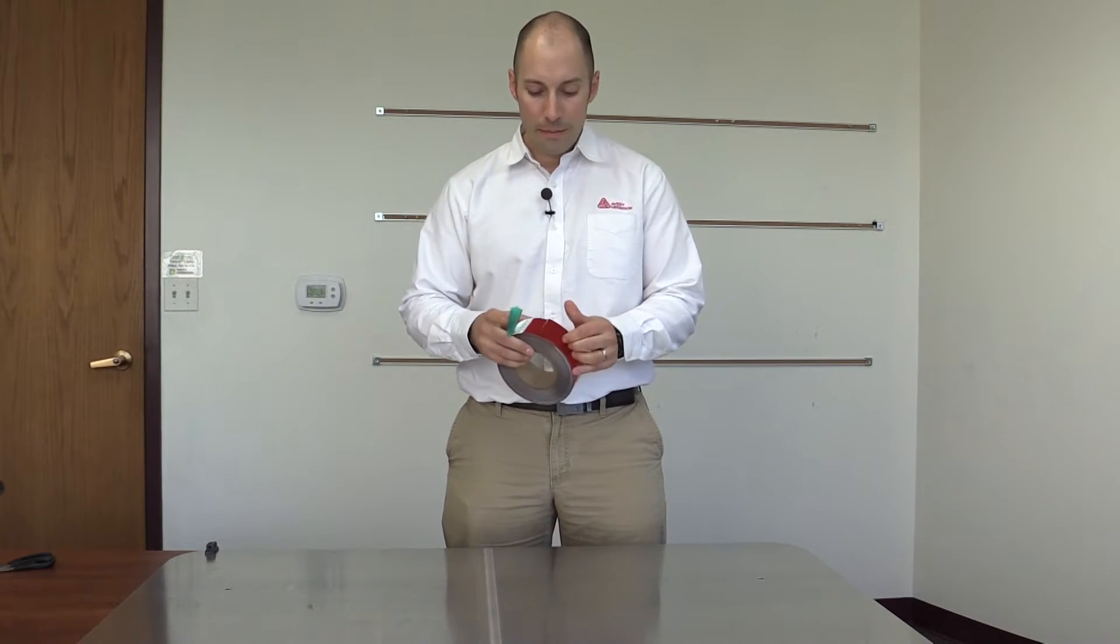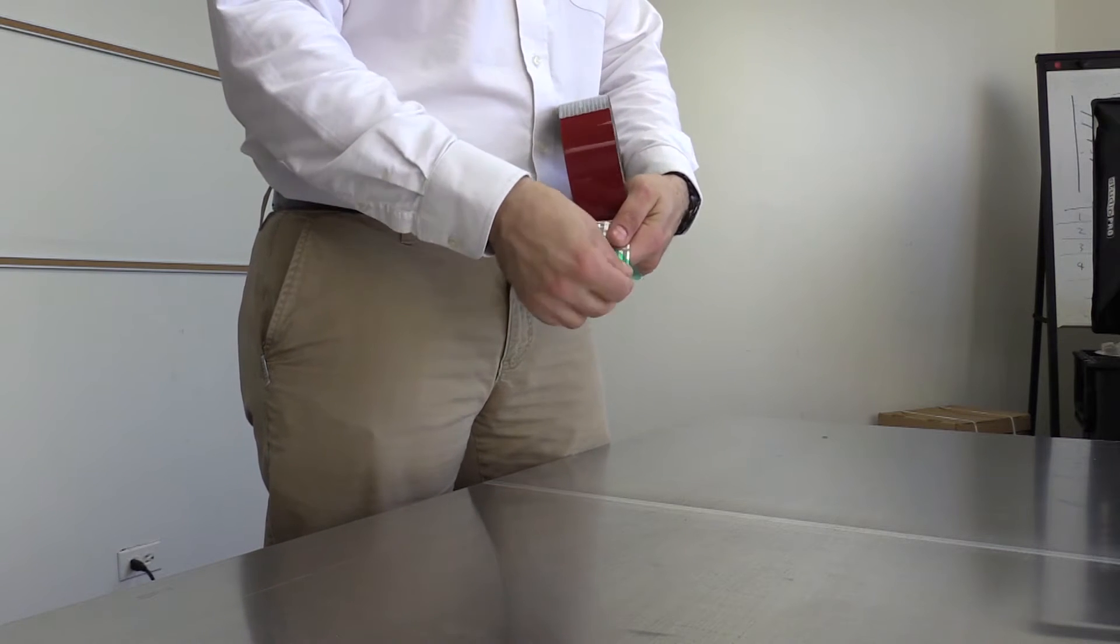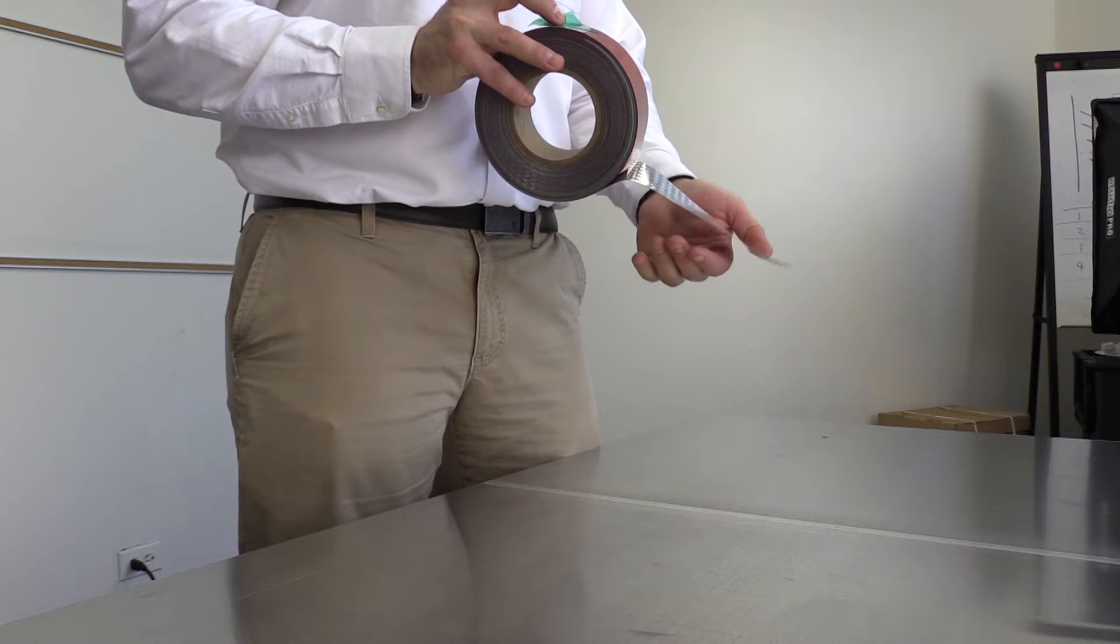Step one is simply removing the liner off the tape itself. You'll see every roll ships with this green tape on the outside. Take it off and save it. The easy trick is to take that tape, stick it on the back side of the liner, and peel back. You'll see the liner comes away really easily.